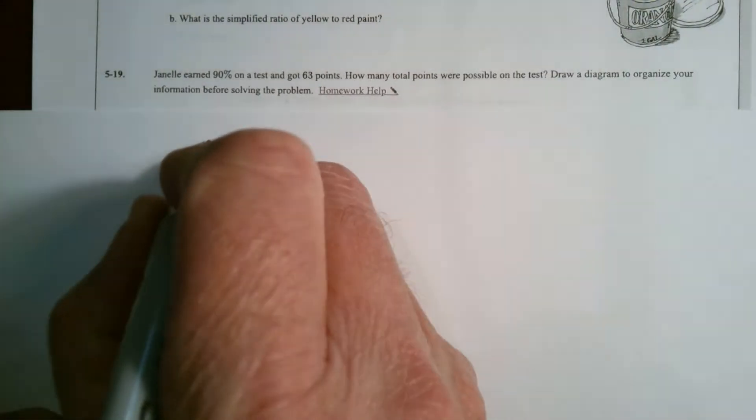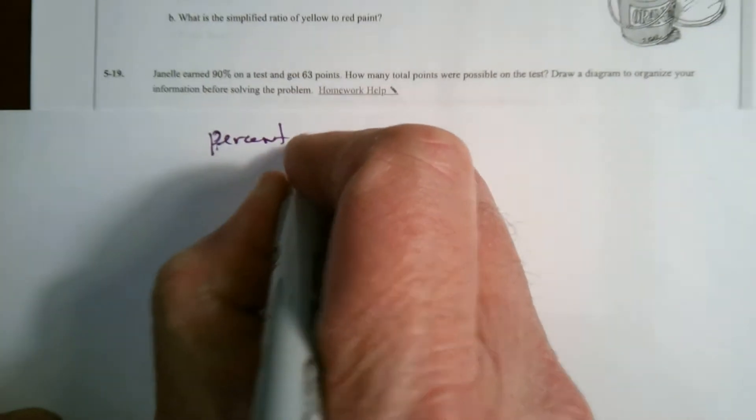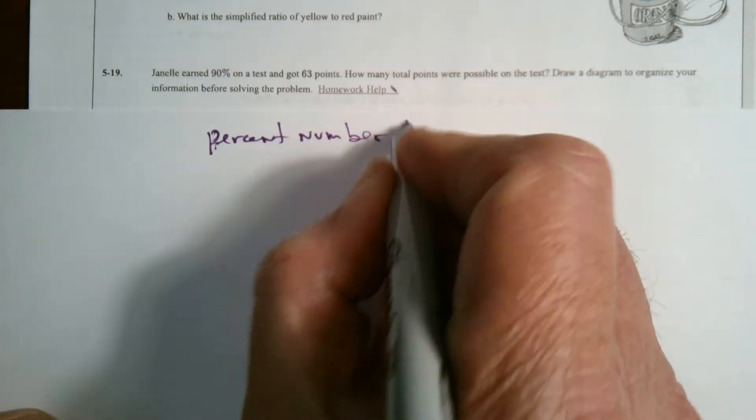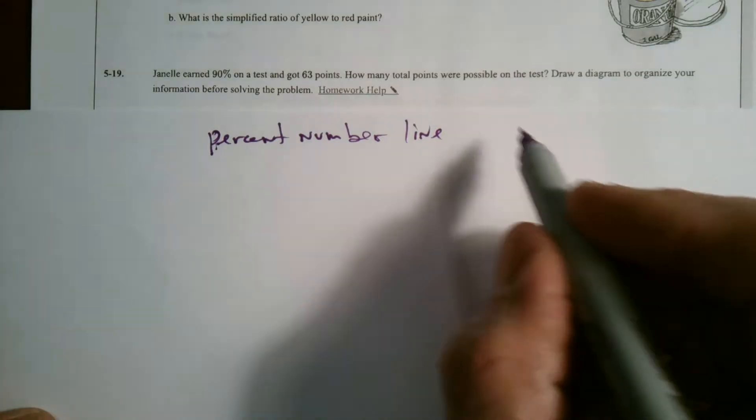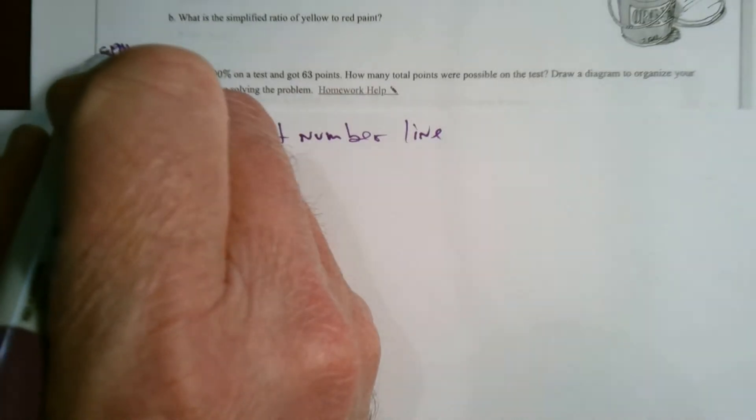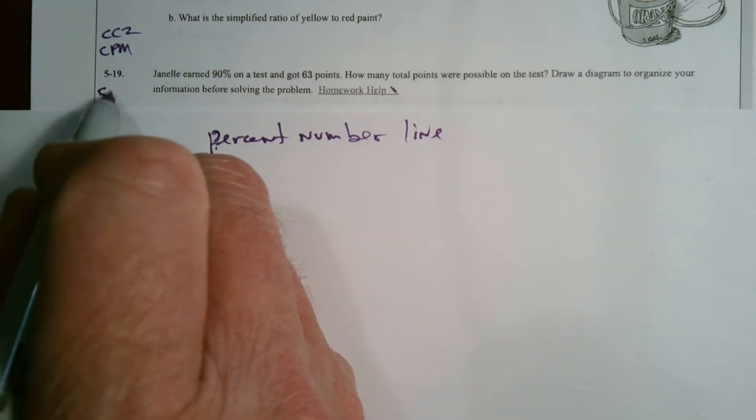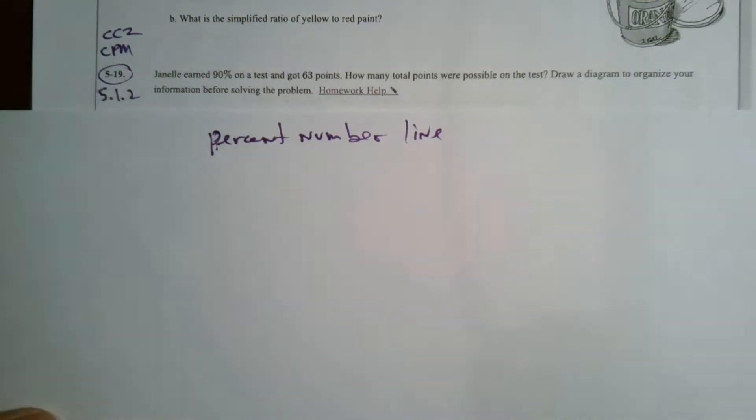And that diagram that I'm going to use is a percent number line. It's going to be my diagram. This is, by the way, CPM, and it is our course two, CC2, and this is section 5.1.2, number 519.